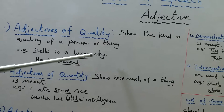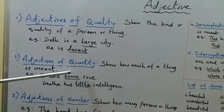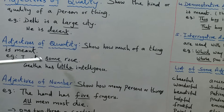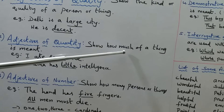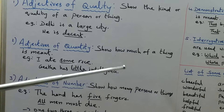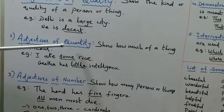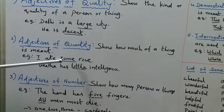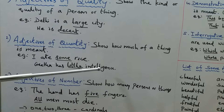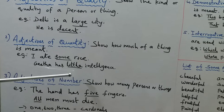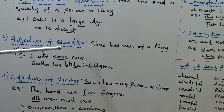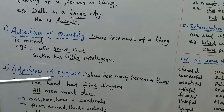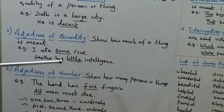Second: adjectives of quantity. They show how much of a thing is meant. The definition itself indicates quantity — how much. Example sentences: 'I ate some rice' and 'Geetha has little intelligence.' Here 'some' and 'little' are adjectives of quantity. Words like few, little, and some show quantity or amount, so they fall under adjectives of quantity.